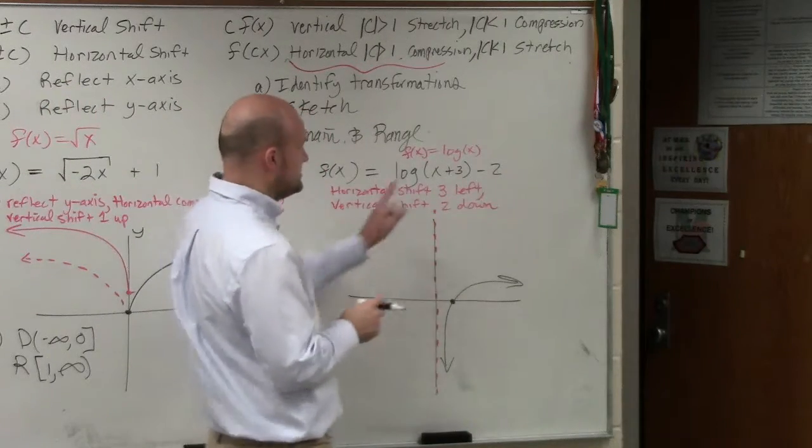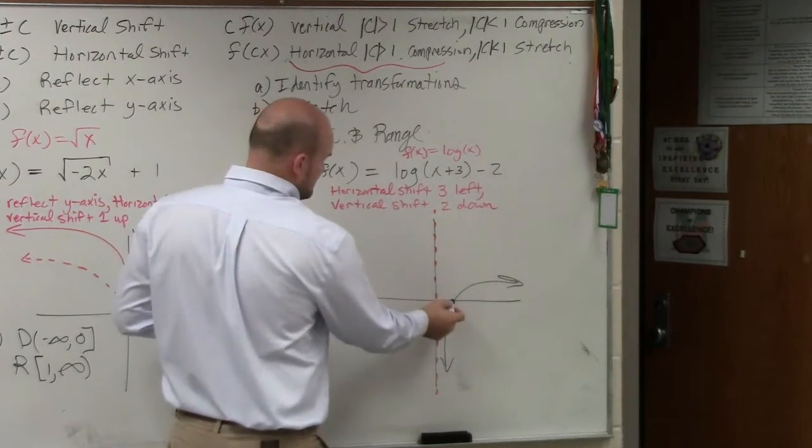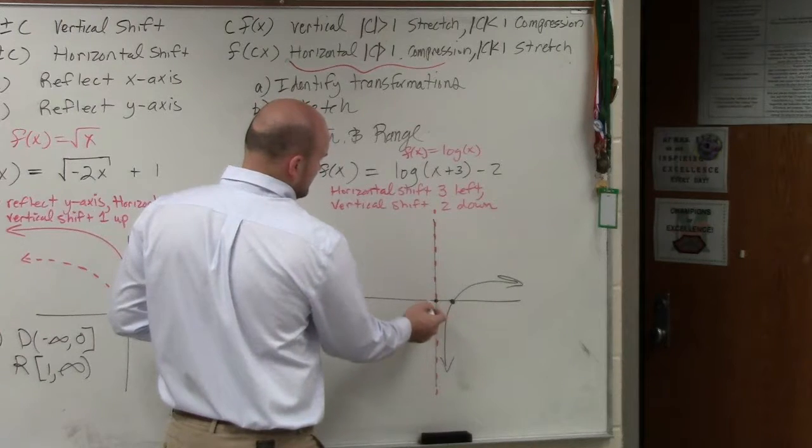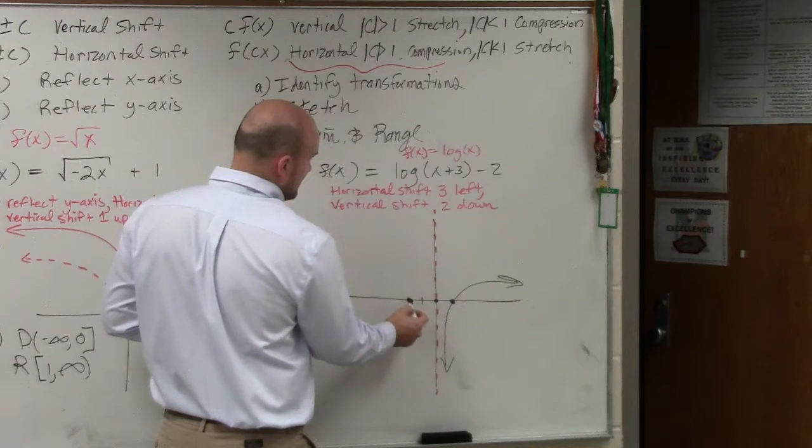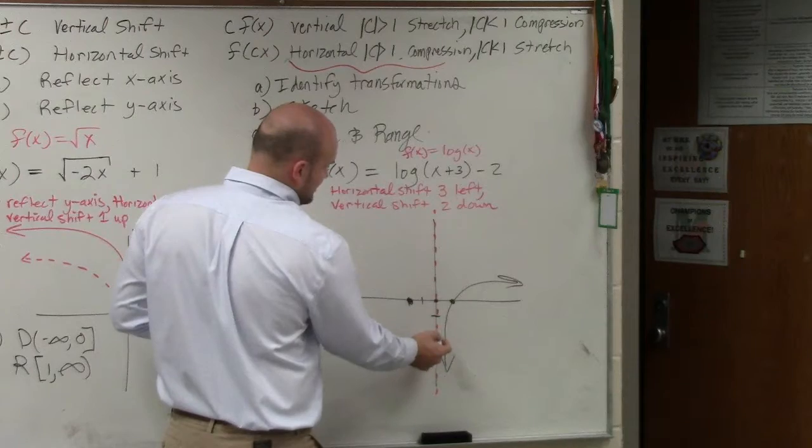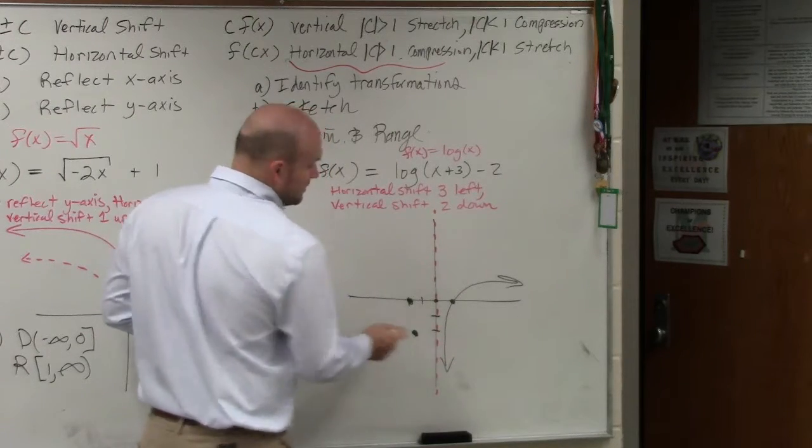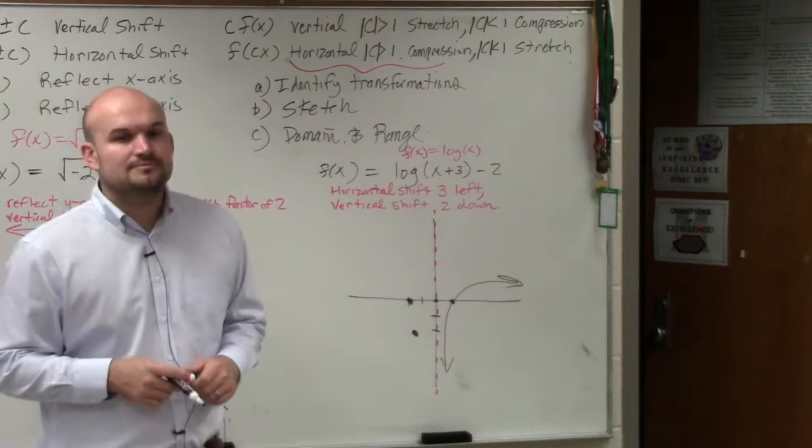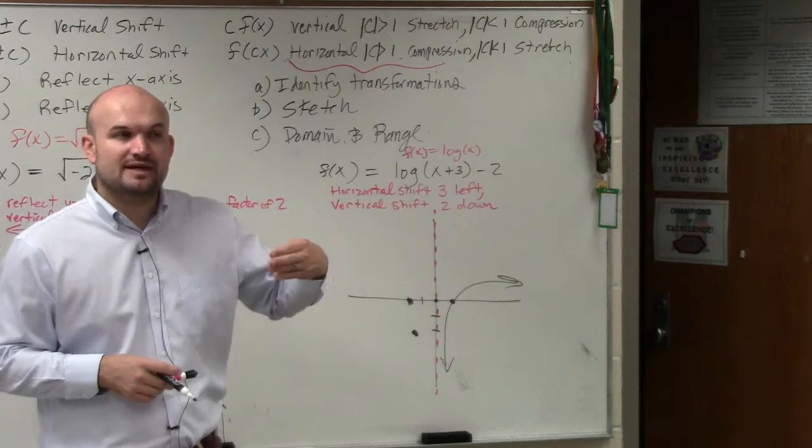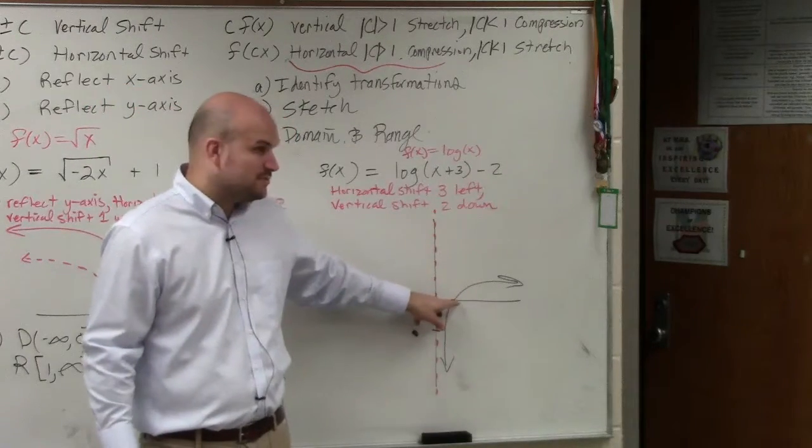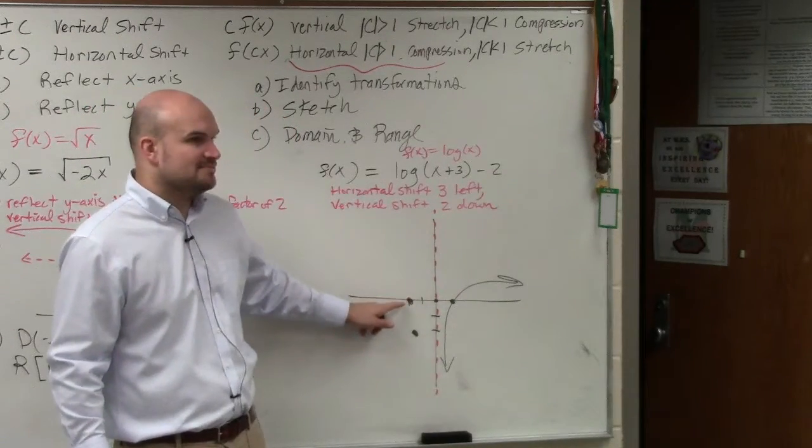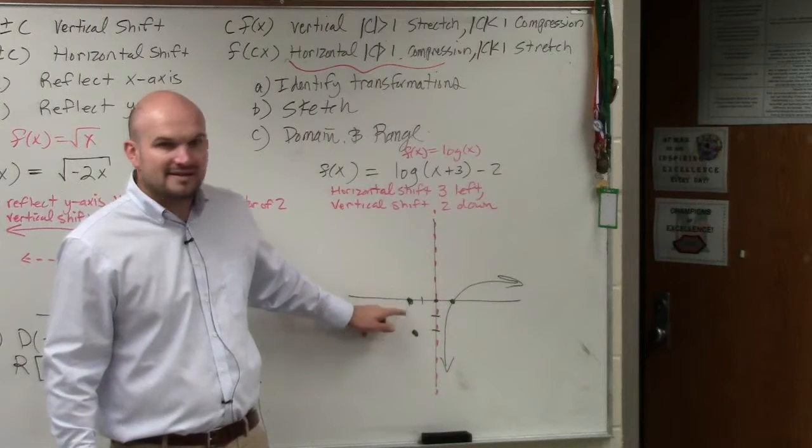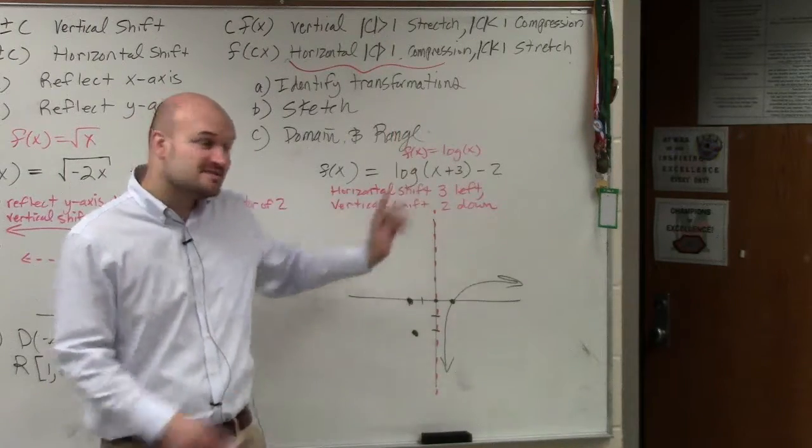So that's the graph. You can see I'm going left 3, so 1, 2, 3, and then down 2, 1, 2. Now, if I'm shifting it left 3, the x-intercept moved left 3. But what else moved left 3? This vertical asymptote.